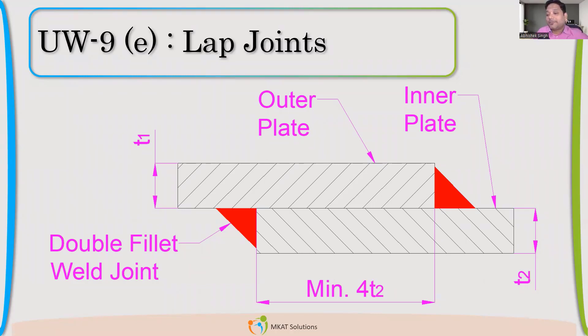If we are having lap joint, what is the limitation? We'll see. But if we are having, then the overlap should be at least 4 times t. And t, this t is the inner plate. So inner plate thickness multiplied with 4, that is the minimum length of overlap which we need to have. And this has to be a double fillet weld joint. I cannot have only single fillet at one side. I need to have a double fillet weld joint.